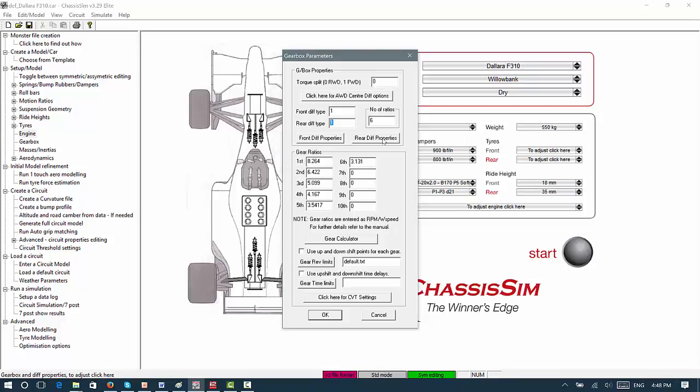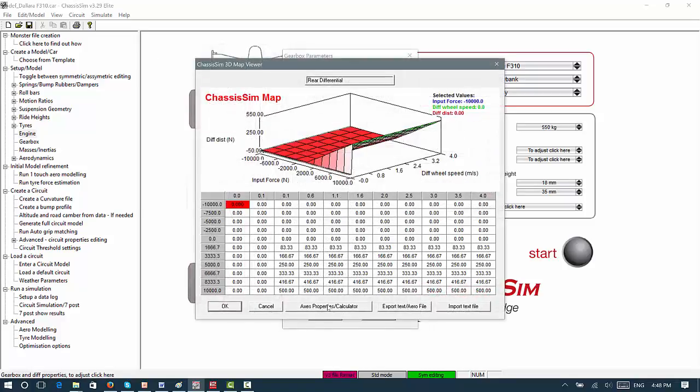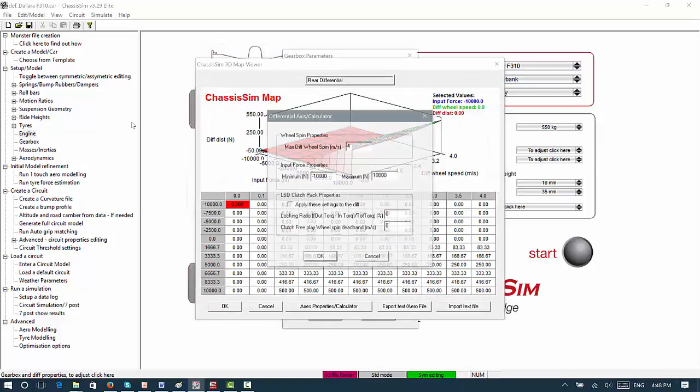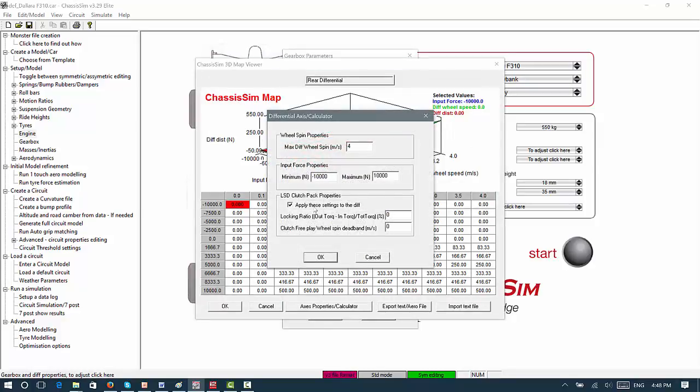Now, to set up the LSD, all you've got to do is go into Access Property Calculator, click apply these settings to the diff. And you put in your locking ratio. So let's just say for the sake of argument, I'm going to put in 15%. And I will put in a bit of free play on the wheel spin. It's more there to help ChassisSim solve for going down the straight to make sure the wheels equalize in a straight line. But in terms of performance, it has zero impact. And when you click on OK, you'll wind up with a graphic that looks like this.